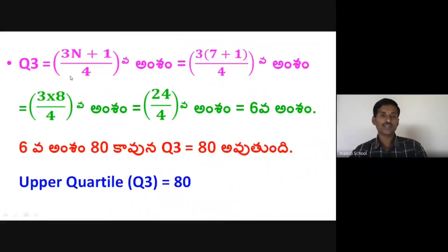Next, the formula to obtain Q3 is the size of 3N plus 1 by 4 item. N is equal to 7, so this becomes 3 into 7 plus 1 by 4. That's 3 into 8 divided by 4.